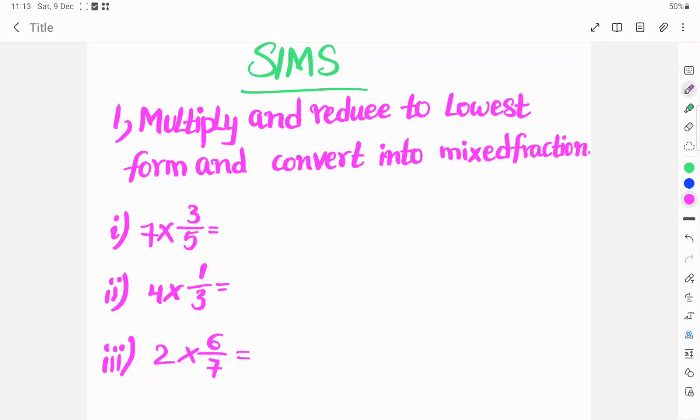Welcome to SIMS. Today I am teaching multiply and reduce to lowest form and convert into mixed fraction. 7 into 3 by 5.